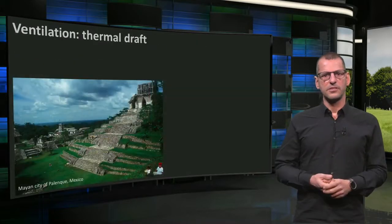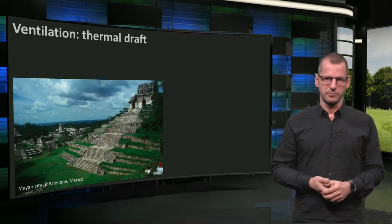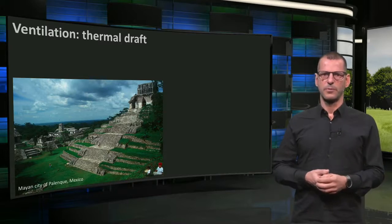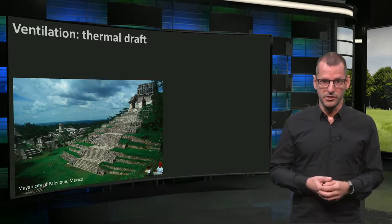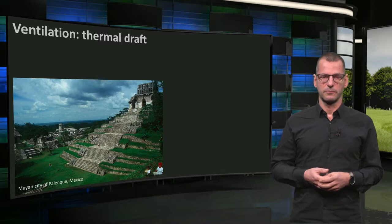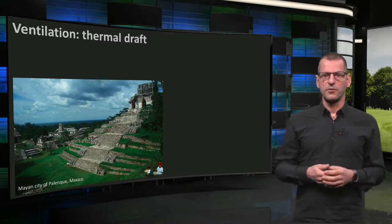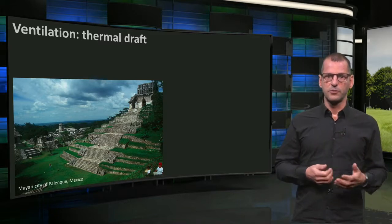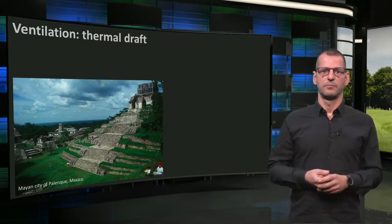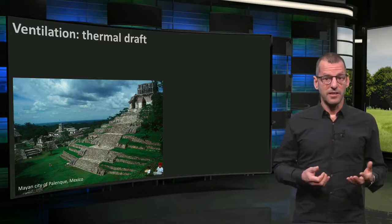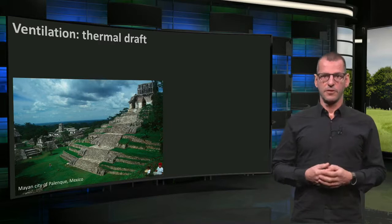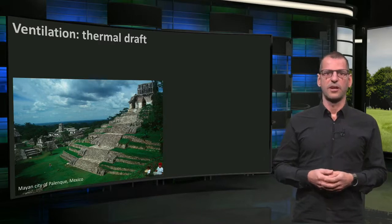Now let's have a look at passive means of ventilation. You already saw that ventilation can be established by over and under pressure. Thermal stacking is another way. A south-oriented dark stony surface will heat up during the day and consequently heat the air above it. This air then becomes lighter and it will rise upwards. Thus, a thermal draft is created.